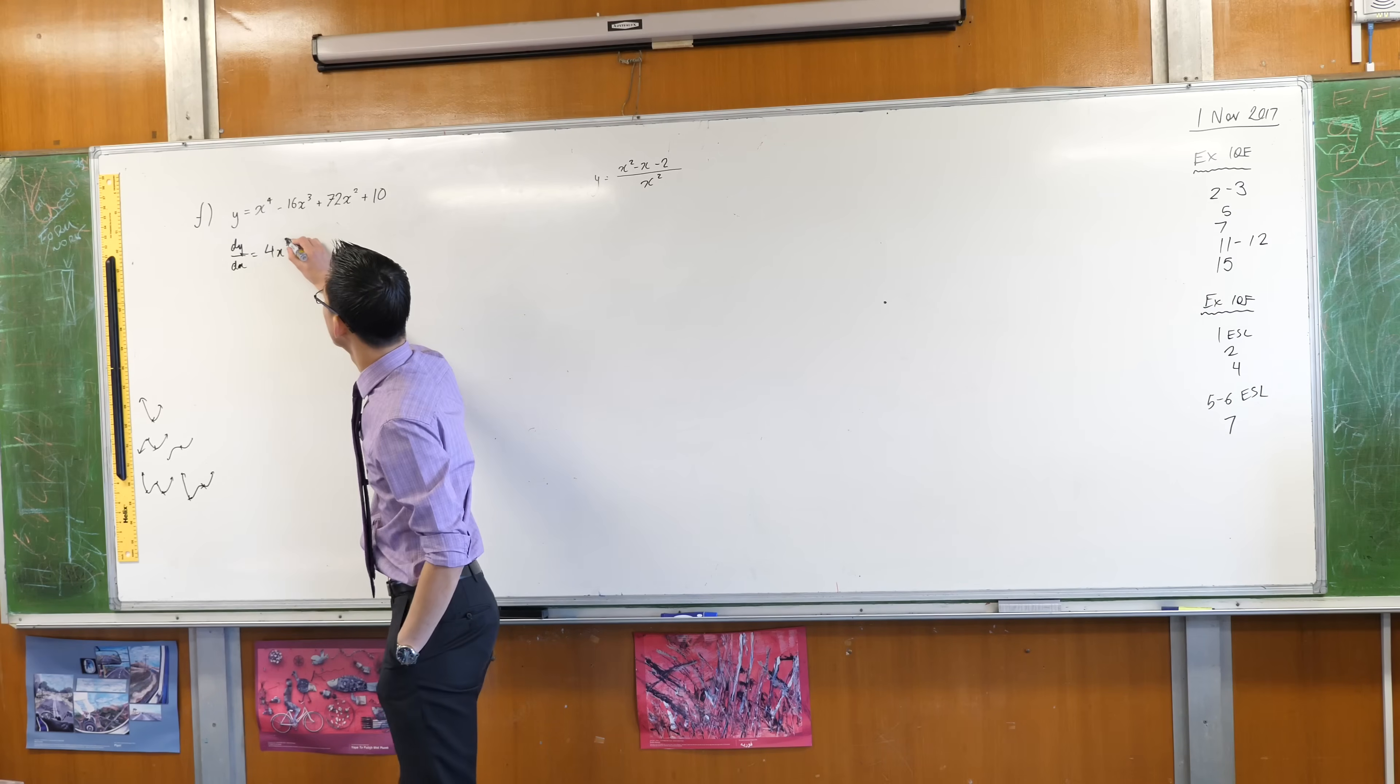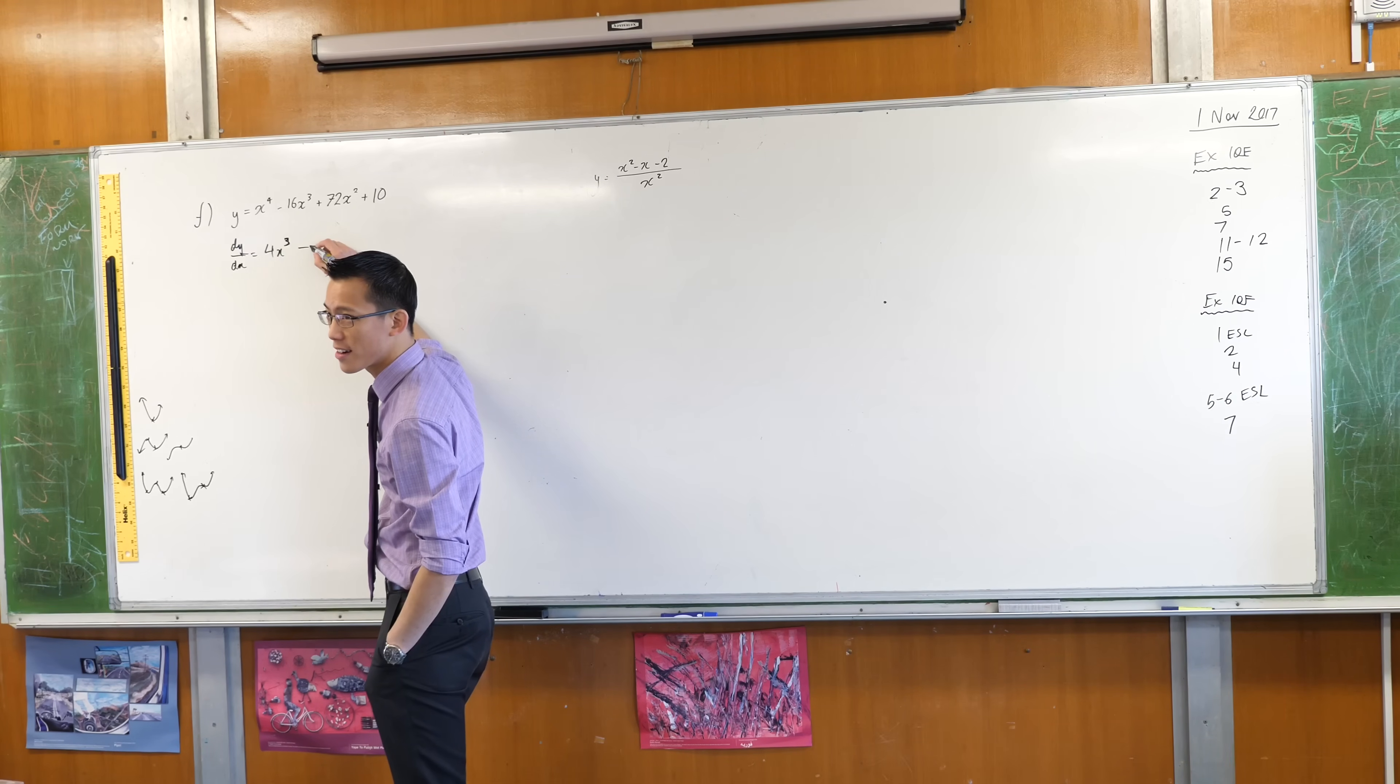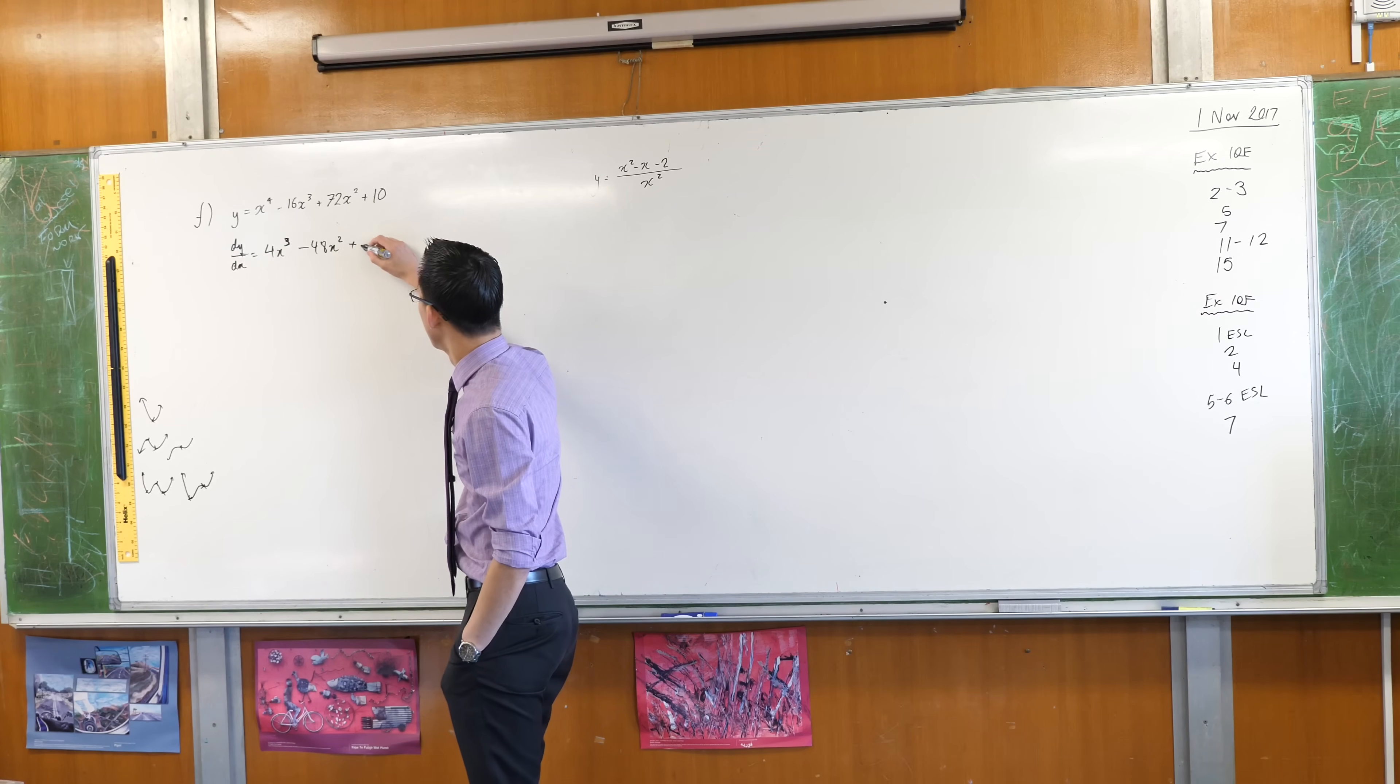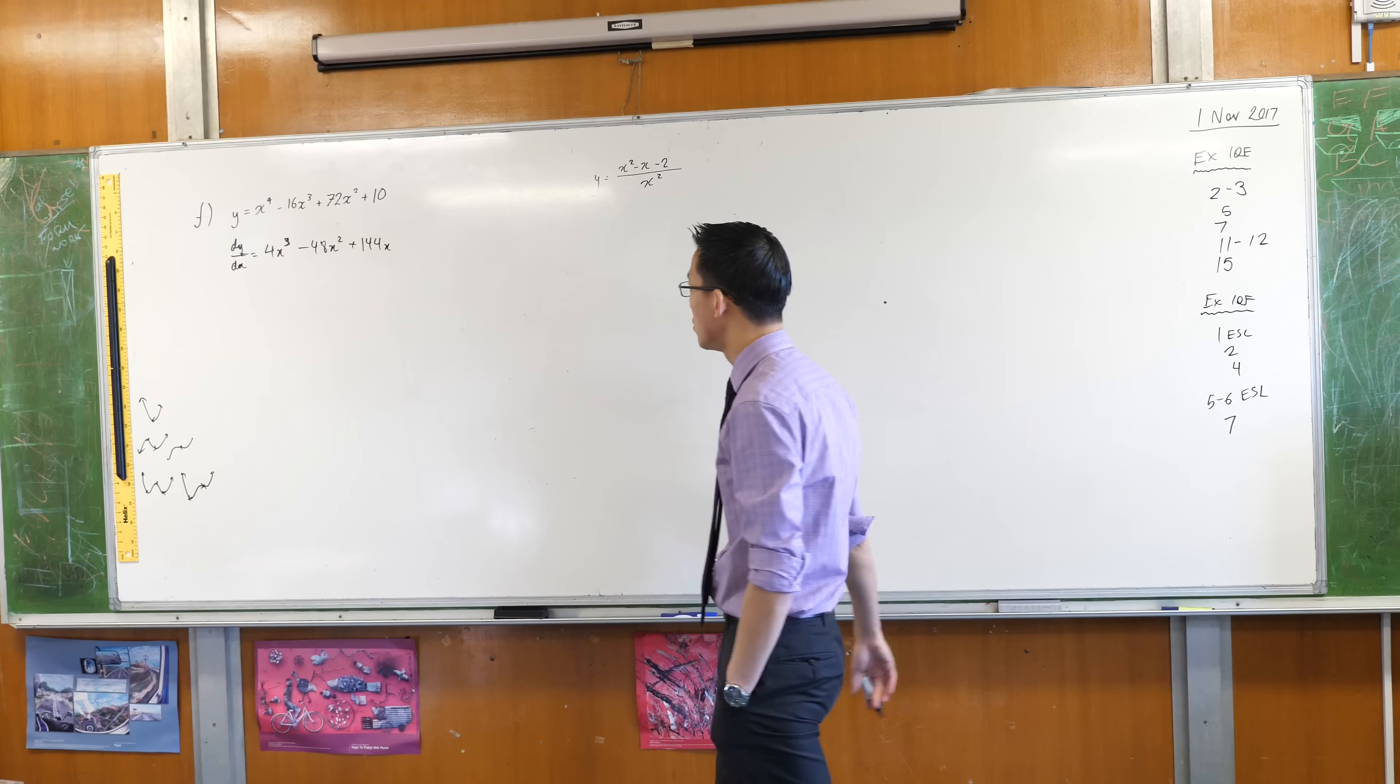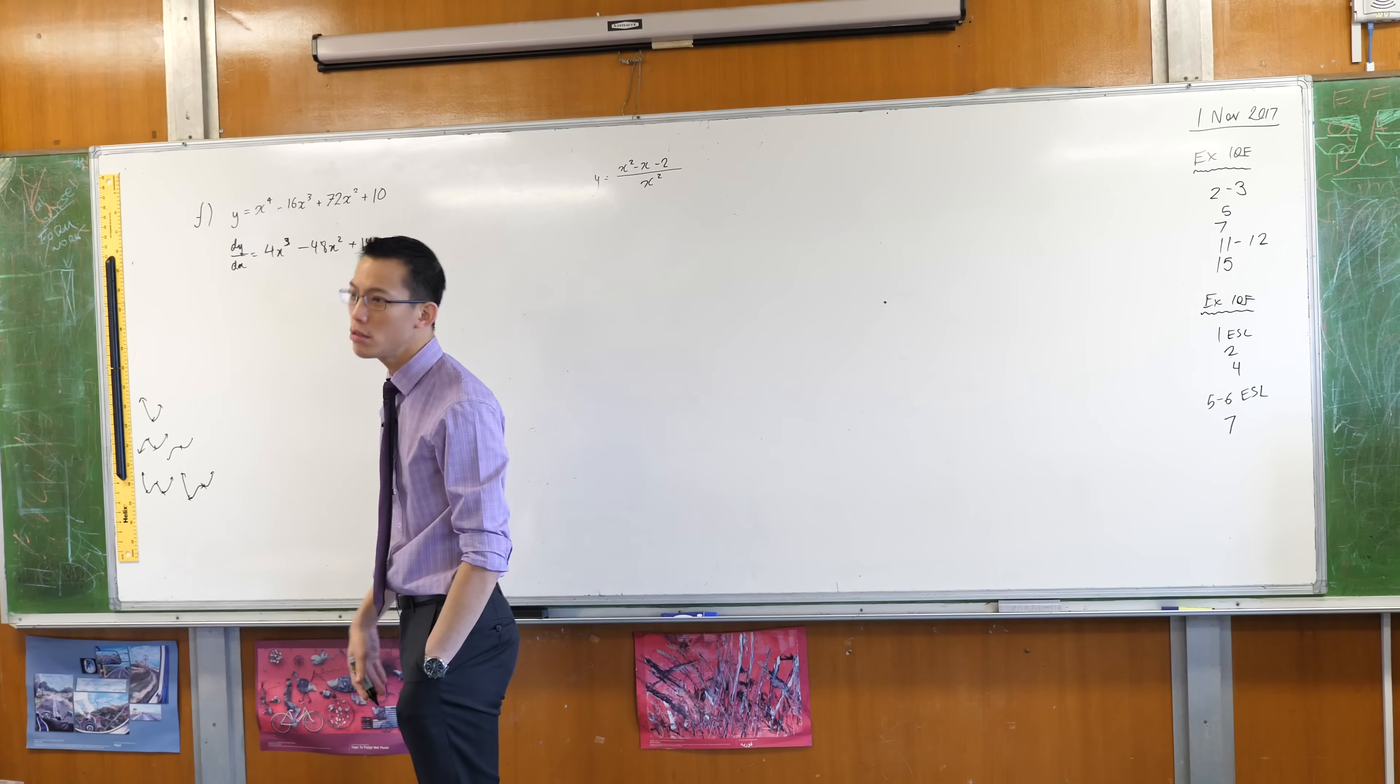So we need to find all these features, so let's differentiate. That gives us 4x cubed, help me out with the rest of it. You're going to get minus 48x squared plus 144.